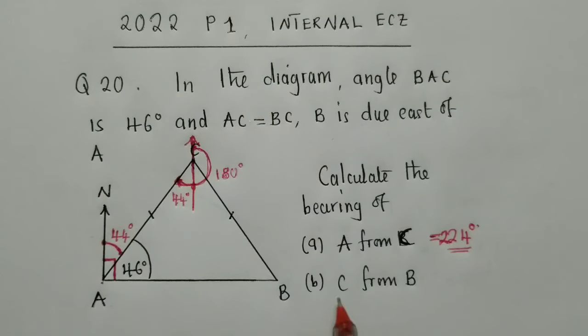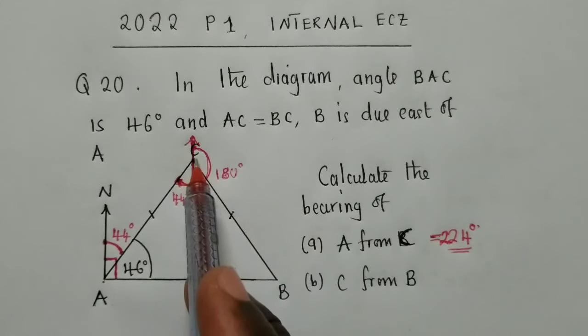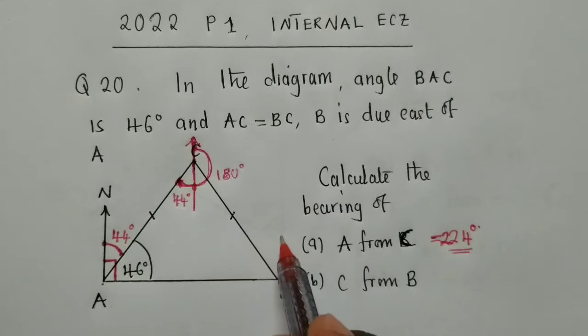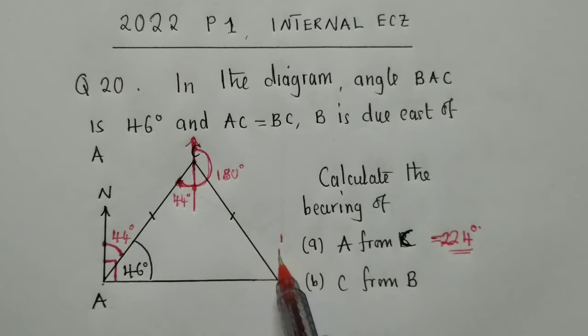Now, for B, right here, this B, we calculate the bearing of C. C is right here from B. So, we should do this. Look at this.